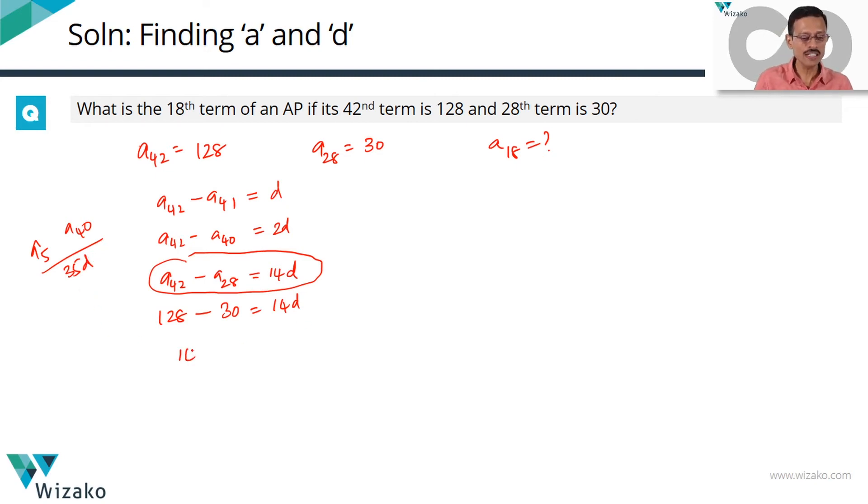Now we know 14 common differences is equal to 98. So how much is each common difference? Each common difference is 98 divided by 14, which is equal to 7.